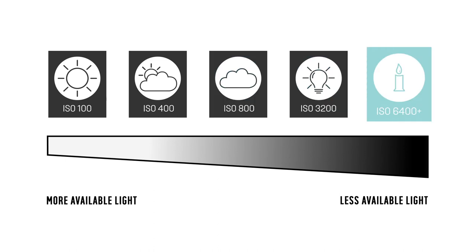A high ISO between 6400 and 51200 is what you'll need for low light photography. This is where the sensor is at its most sensitive and will amplify the light to compensate for the lack of light.